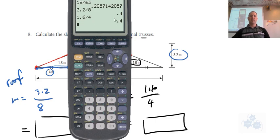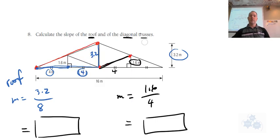So when you do both of those calculations, you get a slope of 0.4. So they're both equal.